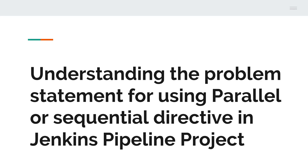When it comes to the parallel directive in Jenkins pipeline, suppose you have several test scenarios: unit test, integration test, security test, and Selenium UI test. All these test scenarios are independent in nature - you don't have any dependency from unit test to integration test, or from security test to UI test. In that scenario, you can go for parallel execution so that you can finish your tests faster than sequential order.